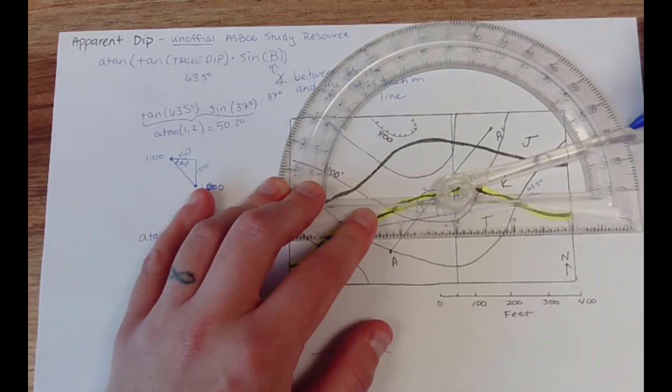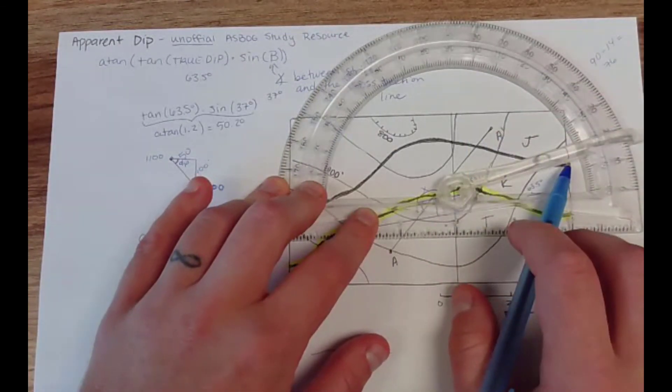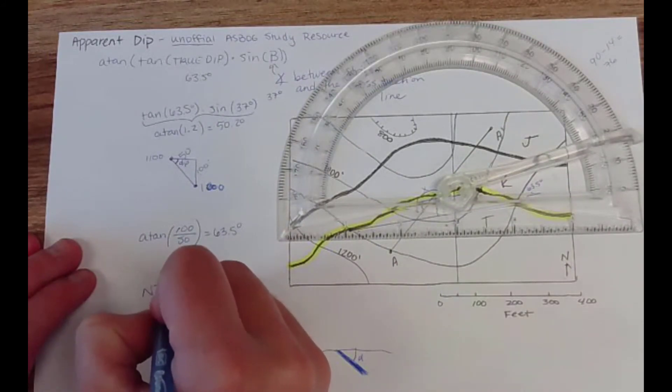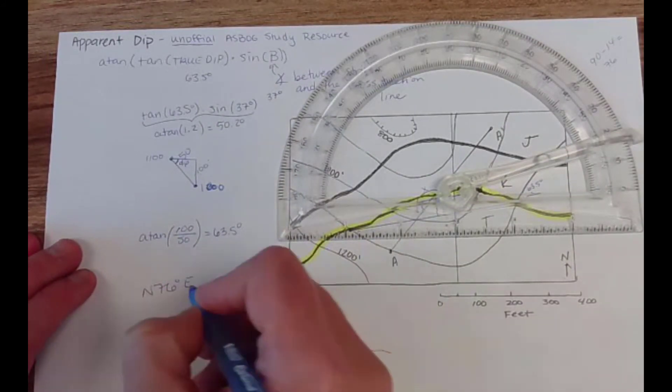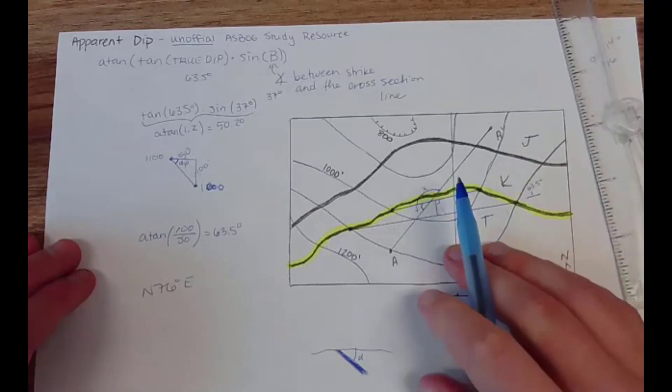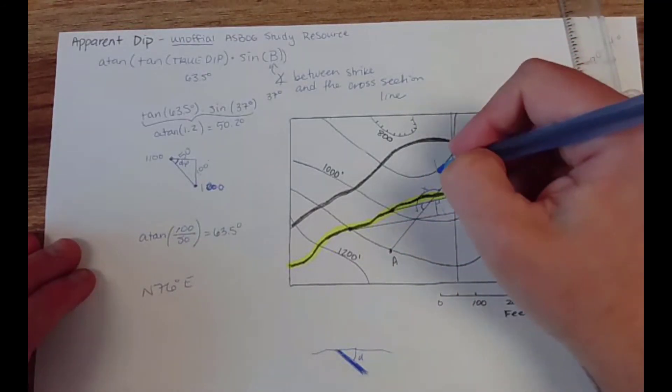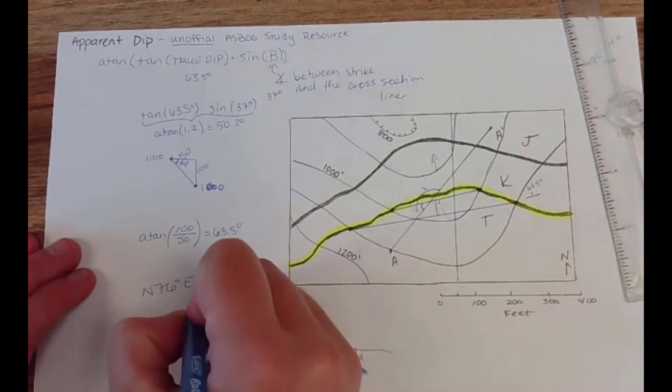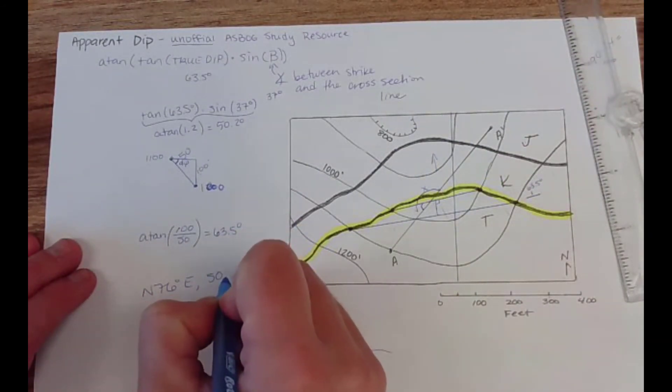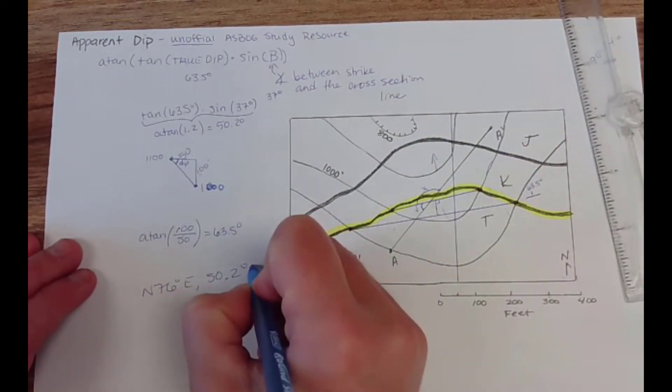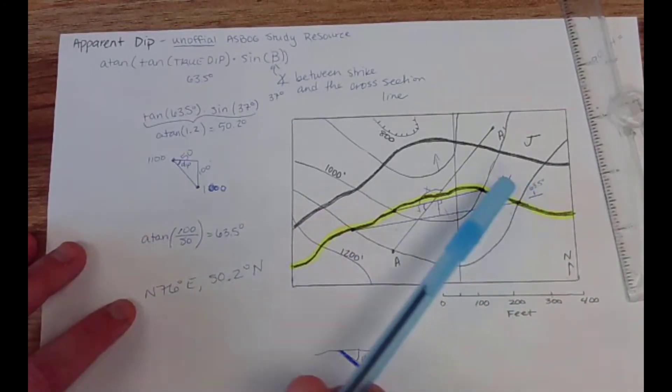Which means coming down from here it is 90 minus 14, 76. So north 76 west, or east, and it is dipping to the north, it's going down that direction. So 50.2 degrees north.